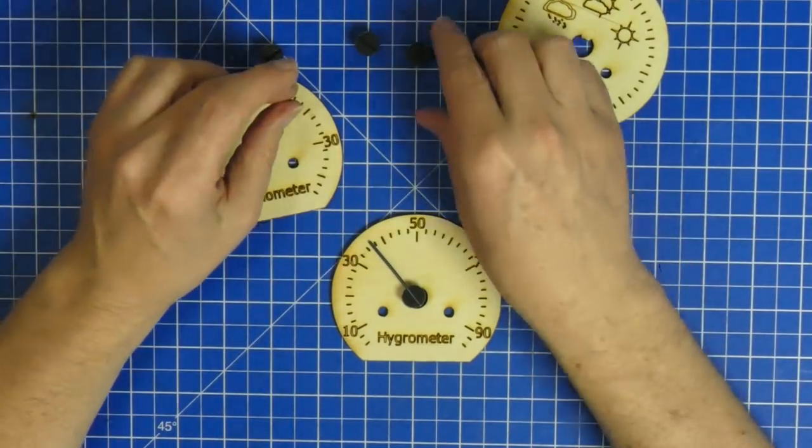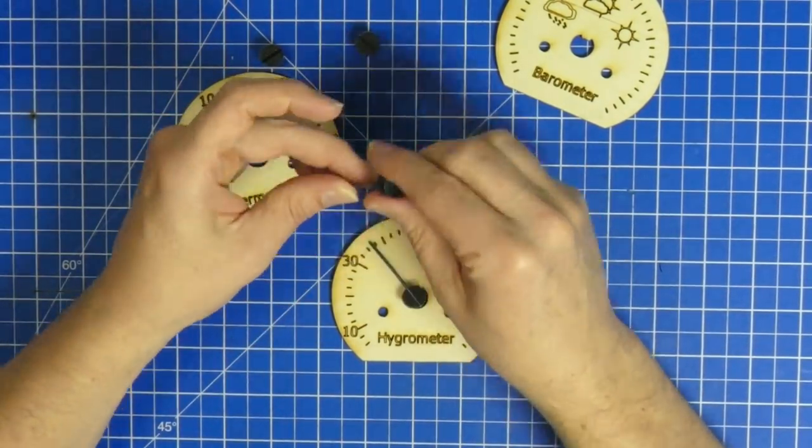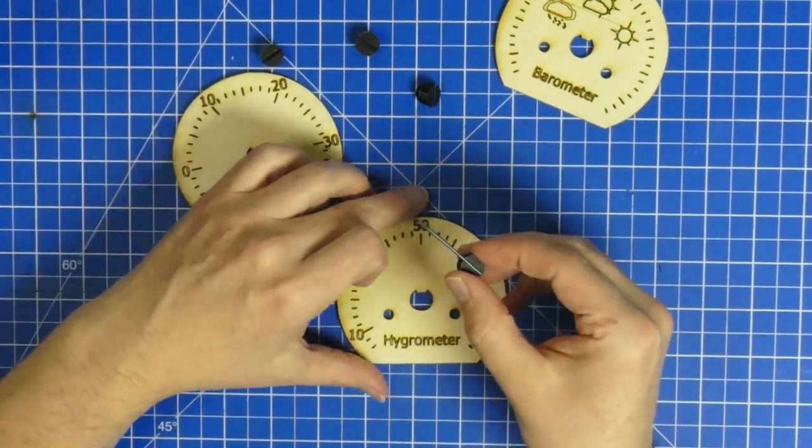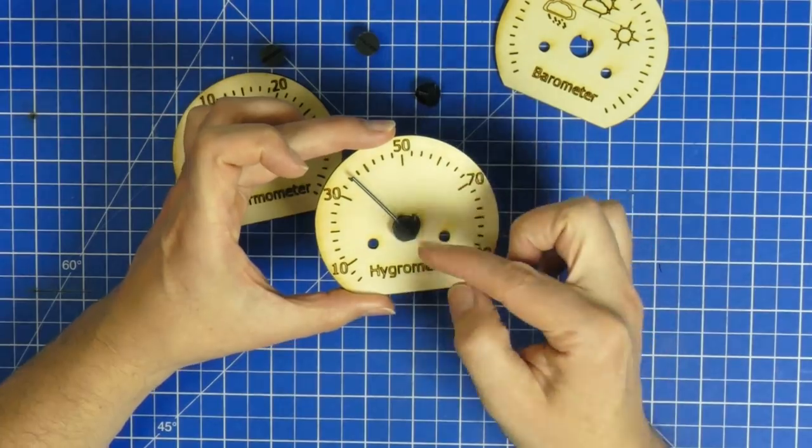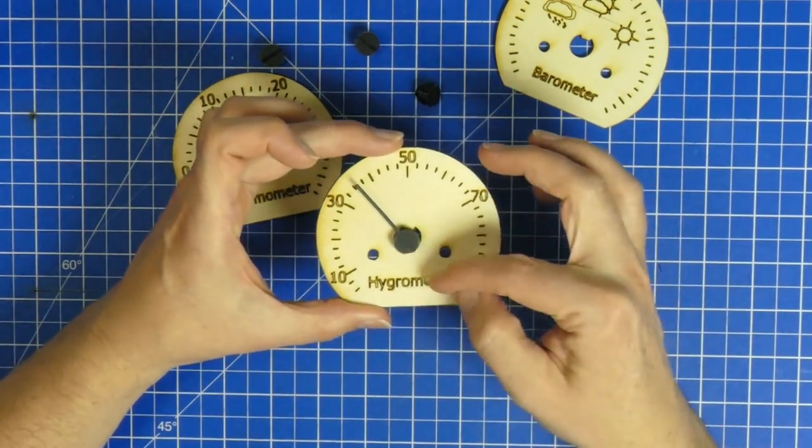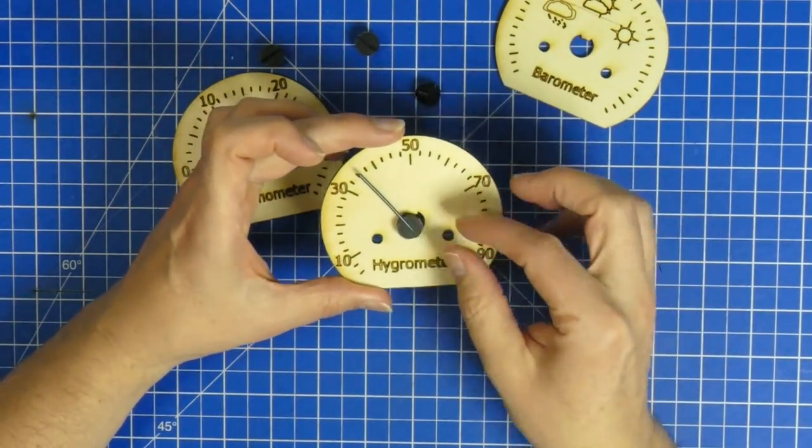Now these have a little indentation at the middle where you can stick something like in this case I did a piece of filament. So this is just some 3D printing filament. You can have it stick out at the back the way you like it.